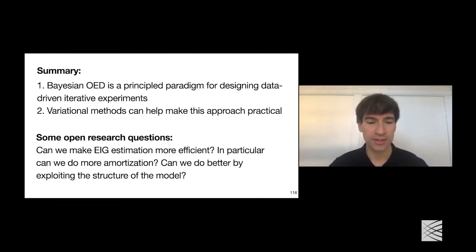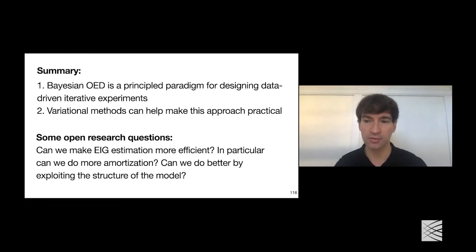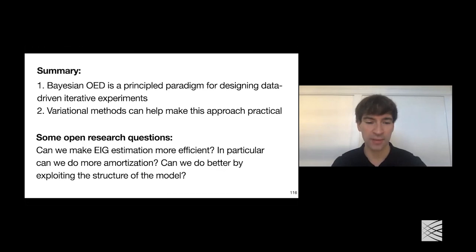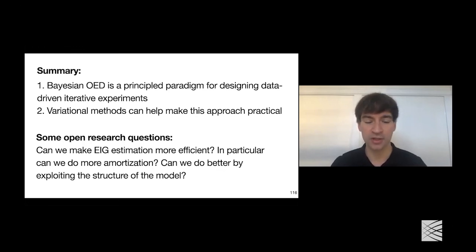An interesting open research question is whether we can make EIG estimation more efficient still. Even with variational methods, I'm still learning one of these distributions between each round. There's a question of whether we might do more amortization upfront. One potential angle of attack would be to exploit additional structure in the model — the variational methods I described are very generic and don't exploit particular model structure, leaving the door open to methods that do.